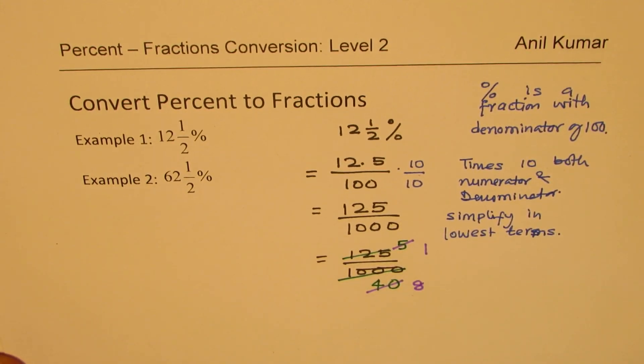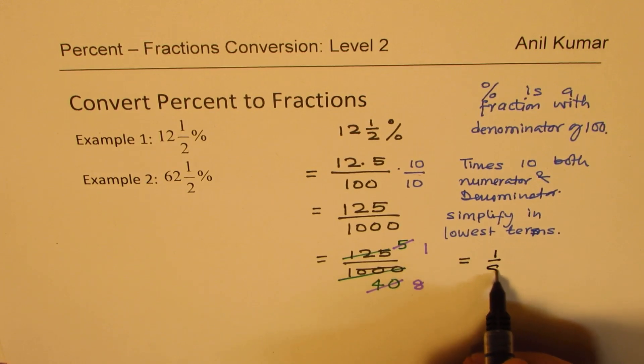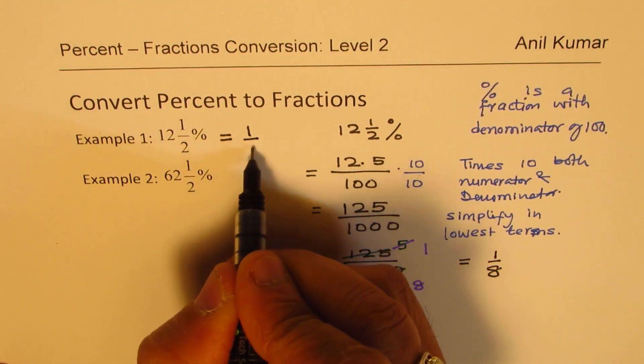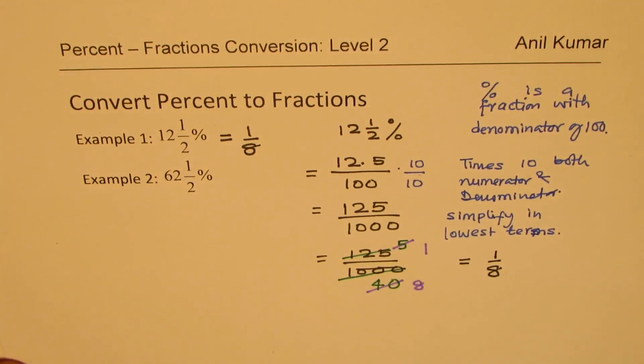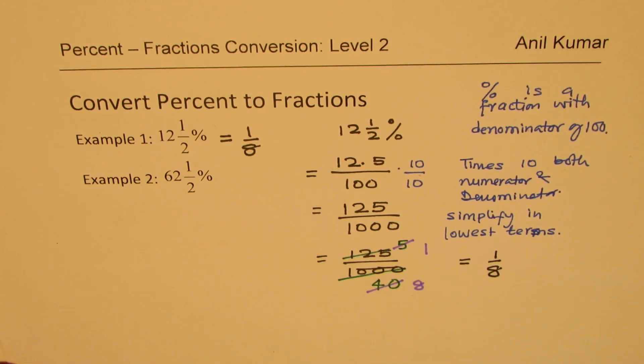Perfect. So I could write 12 and a half percent in the lowest terms as equal to 1 over 8. So for 12 and a half percent, we get our answer as 1 over 8. It does make sense to you. So that is how we are going to do it. Now, let us try to do also 62 and a half using the same process.